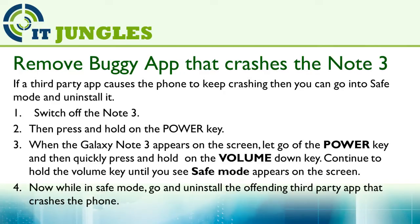You can also go into safe mode to remove any buggy app that causes the phone to keep crashing. To go into safe mode, first switch off your Note 3. Then press and hold the power key. When the Galaxy Note 3 logo appears on the screen, let go of the power key and then quickly press and hold the volume down key. Continue to hold down the volume key until you see safe mode appear at the bottom left-hand corner of the screen. While you are in safe mode, you can go and uninstall any offending third-party apps that cause the phone to crash.